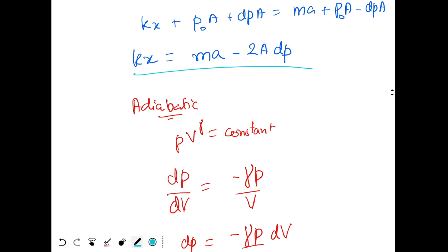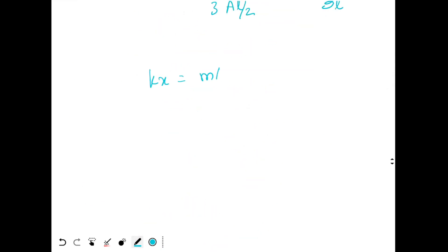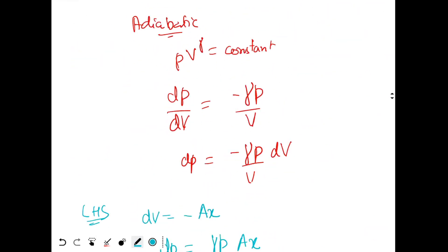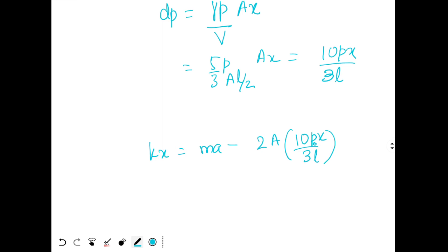Now we put DP in this equation. So K X equal to Ma minus 2 ADP. Minus 2 ADP is what? 10 P X by 3 L. We will just do one thing, we will put P0 over here, P0 because initial pressure is P0.